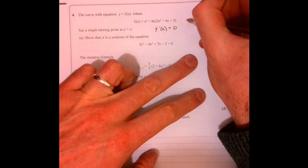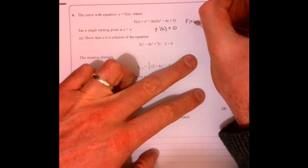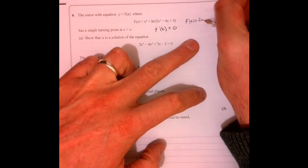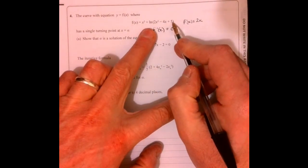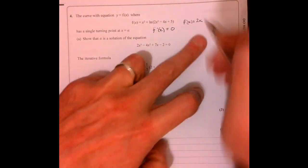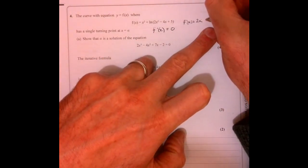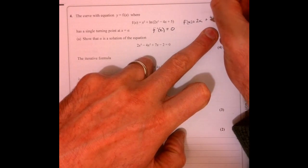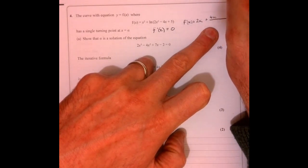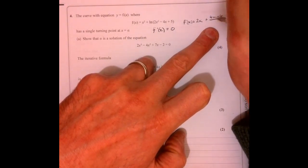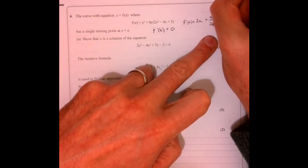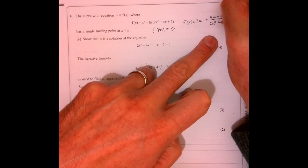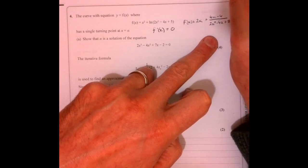So if we differentiate this first part, that's going to give me 2x. Differentiating this part here, that's going to give me, I'm going to jump a little step here, it's going to give me 4x minus 4, that's the derivative of this, over 2x squared minus 4x plus 5.